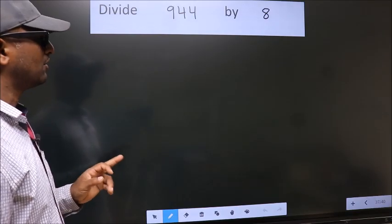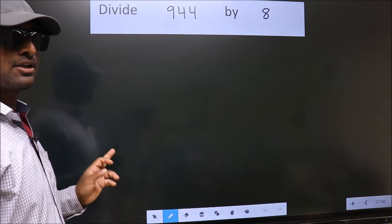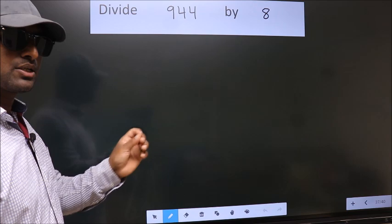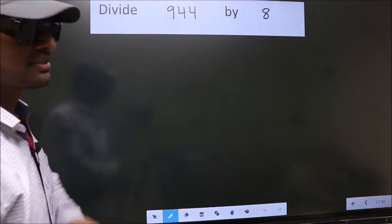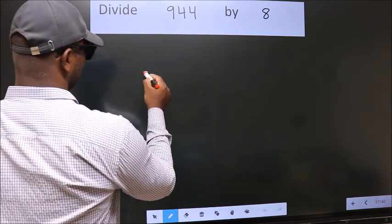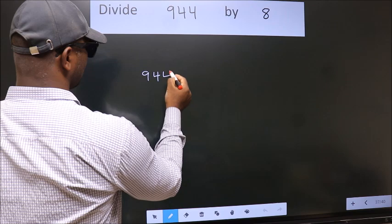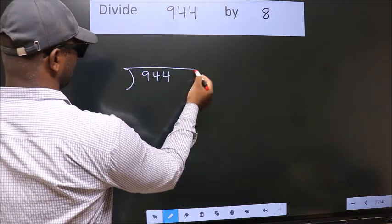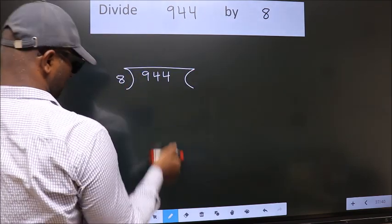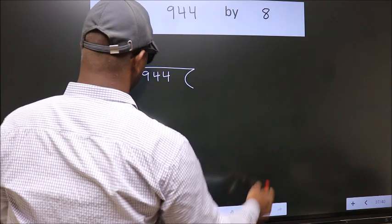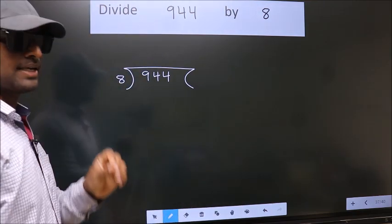Divide 944 by 8. To do this division, we should frame it in this way. 944 here, 8 here. This is your step 1.